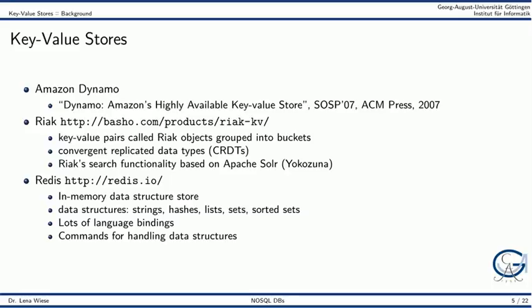A famous key value store is the Amazon Dynamo system. Several open source key value stores are available, like for example RIAC. RIAC calls key value pairs RIAC objects and groups them into buckets. It offers convergent replicated data types and a search functionality based on Apache Solar. The key value store Redis calls itself an in-memory data structure store. It offers several language bindings and commands for handling its data structures.